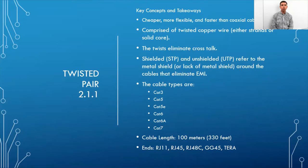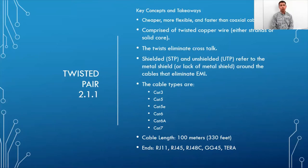Both twisted pair and coaxial cable use copper, but coax has a single solid core whereas twisted pair has multiple copper wires that are stranded or twisted together.